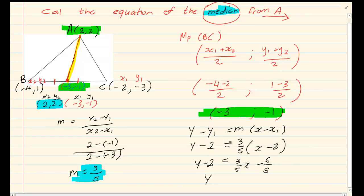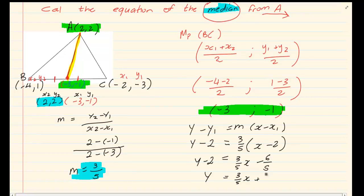And then solve for your C by taking your 2 over. So we have y is equal to 3 over 5 x minus 6 over 5 plus 2, which equals to 4 over 5. So our equation is y is equal to 3 over 5 x plus 4 over 5.